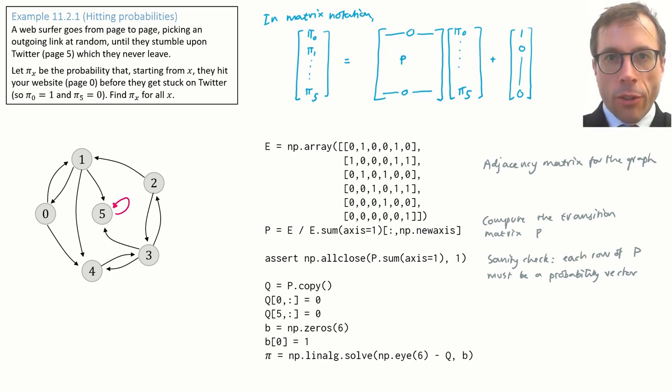All this code does is it says if there are n links out of a page, then each link has probability 1 on n. I always like to do a sanity check when I'm doing computations with Markov chains. Each row of the transition matrix has to sum to 1. In other words, from every state, the sum of probabilities of all the possible transitions you could make from that state must be equal to 1.